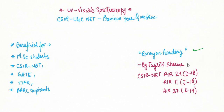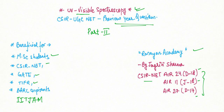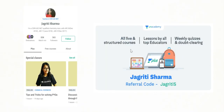Hello everyone, welcome to Rasayan Academy. My name is Jagriti Sharma and I have qualified CSIR NET thrice. Today we are going to solve previous year questions — this is part two of UV-Visible Spectroscopy. This class will be useful for BSc and MSc students and also for CSIR NET, GATE Chemistry, TIFR, BARC, and IIT JAM aspirants, as UV-Visible spectroscopy is a relatively easier topic.